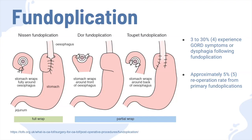After this procedure, approximately 3 to 30 percent of patients continue to experience GORD symptoms as well as dysphagia following their primary fundoplication. Some of the anatomical reasons for failure include hiatal hernia, a slipped or misplaced wrap, and an excessively tight wrap. However, the decision to re-operate is purely based on symptom recurrence and its effect on the patient's wellbeing.